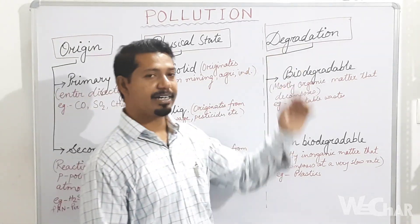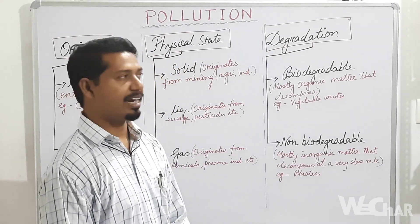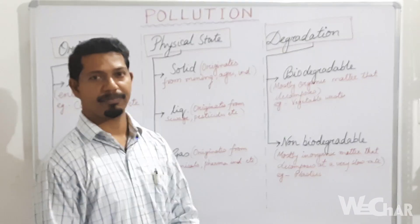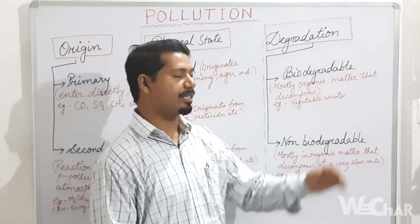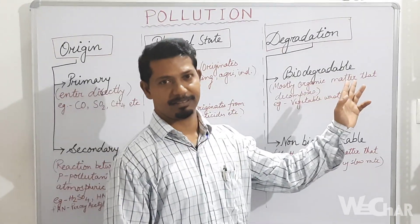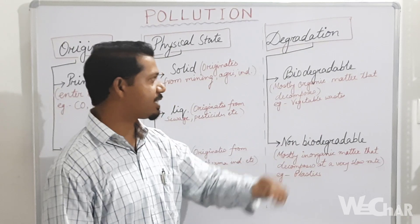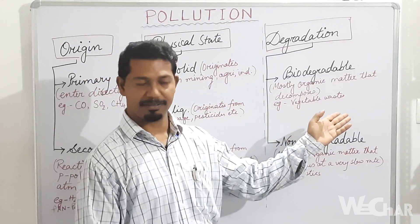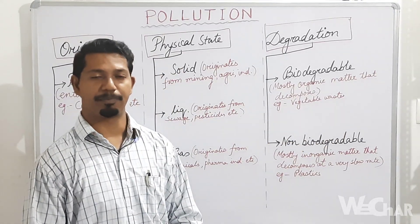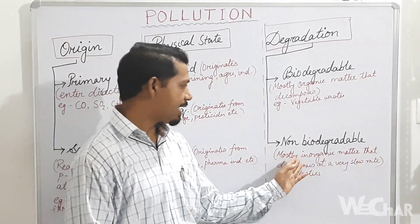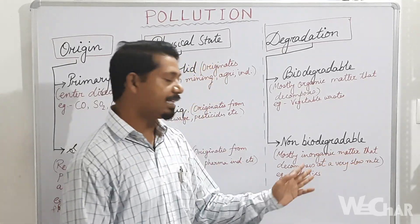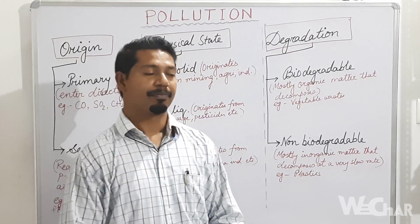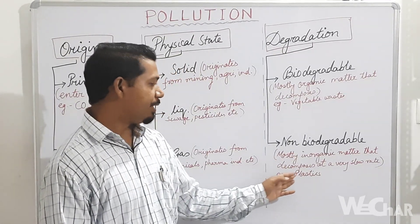In the case of degradation, pollutants are classified as biodegradable and non-biodegradable. Biodegradable pollutants are mainly organic matter that decomposes easily — for example, vegetable waste. Non-biodegradable pollutants are mostly inorganic matter and they decompose at a very slow rate — for example, plastics.